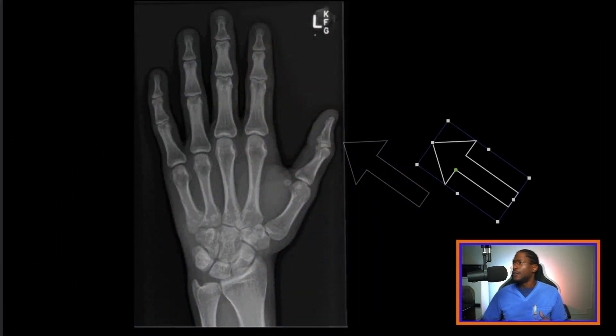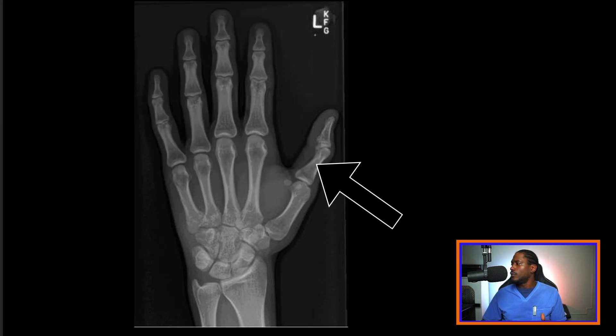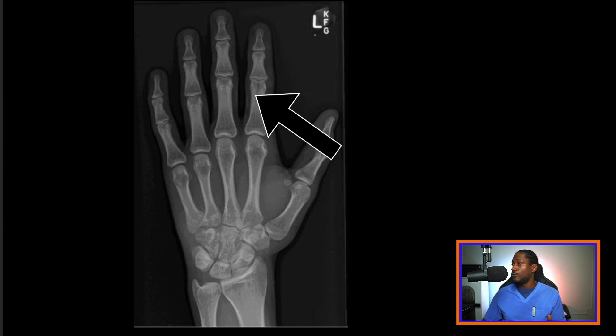Dorsal dislocation of the proximal interphalangeal joint of the second digit. I hope now that I've said it to you, it doesn't sound as much like word soup. Just to reinforce what I've been talking about, we're going to jump right into some x-rays to get a better understanding. Now that we're in the x-ray, just to reinforce some of the things I was speaking about before — as you can see, these are the phalanges. The specific one we're discussing is the second digit, which is your index finger, pointer finger — however you want to refer to it. In the medical field, they say second digit.